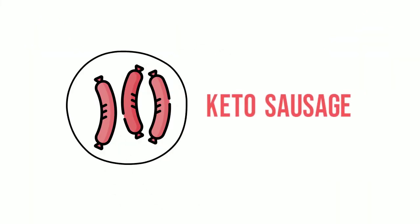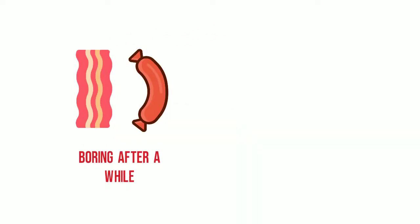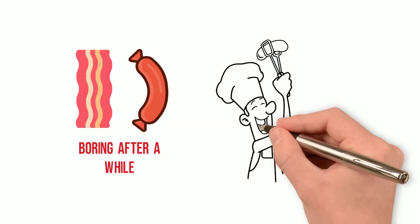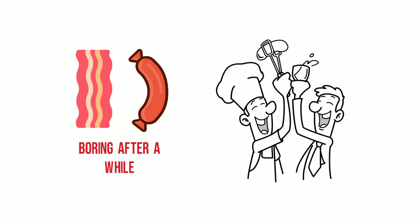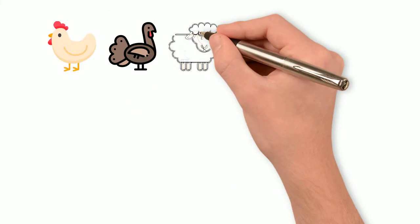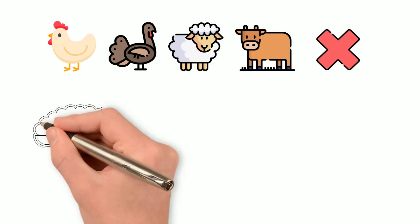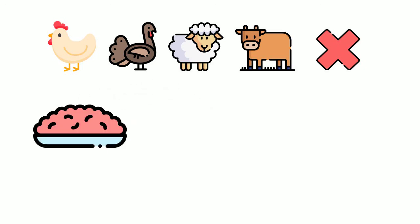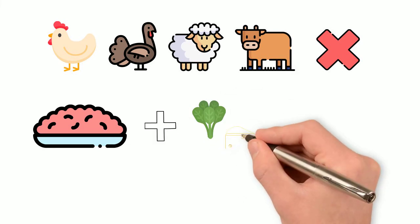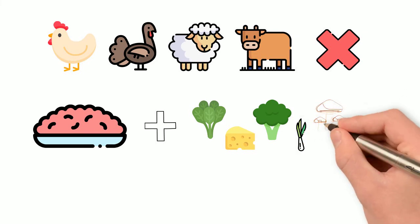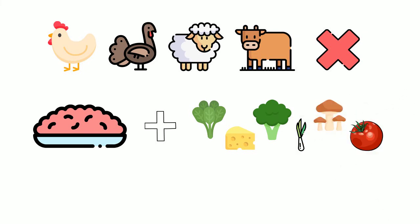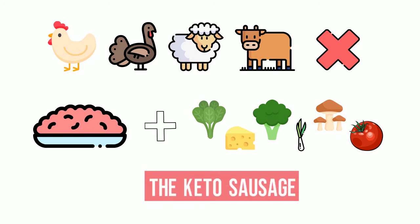Next we're going to look at what I will call a keto sausage. Because bacon and sausage can become boring after a while for breakfast, we're going to look at a few variations on that theme. Chicken, turkey, lamb and beef are not normally considered breakfast choices, but if you buy them already minced and mix them with the following — spinach, cheese, broccoli, onion, mushroom or tomato, either mixed together or individually — that can form what I term the keto sausage.